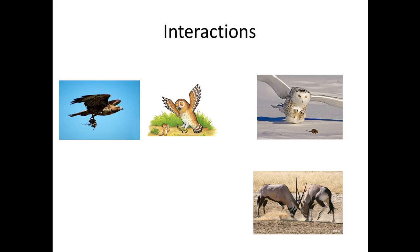The interactions between organisms can be interspecific — inter means between different organisms, among two or more species, for the same limited resource. It can be the prey, the food, light, water, something like that. In the picture, the hawk is preying on the mouse, as well as the owl needs to eat a mouse as a food source.